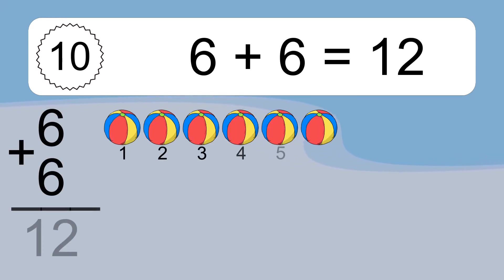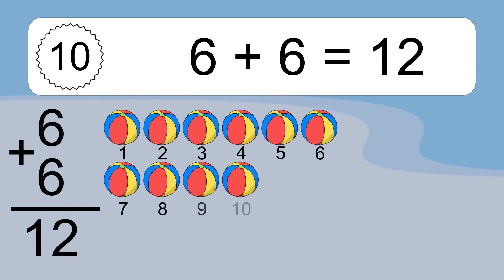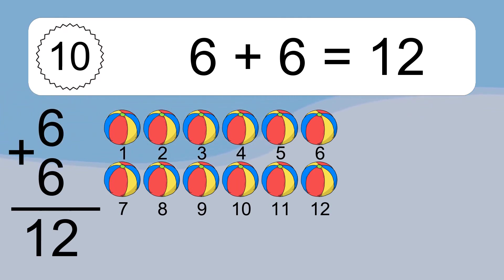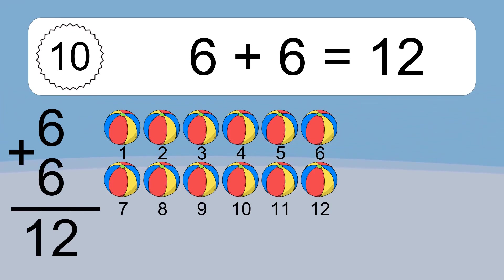6 plus 6 equals what? 6 plus 6 equals 12. Let's count it. 1, 2, 3, 4, 5, 6, 7, 8, 9, 10, 11, 12.